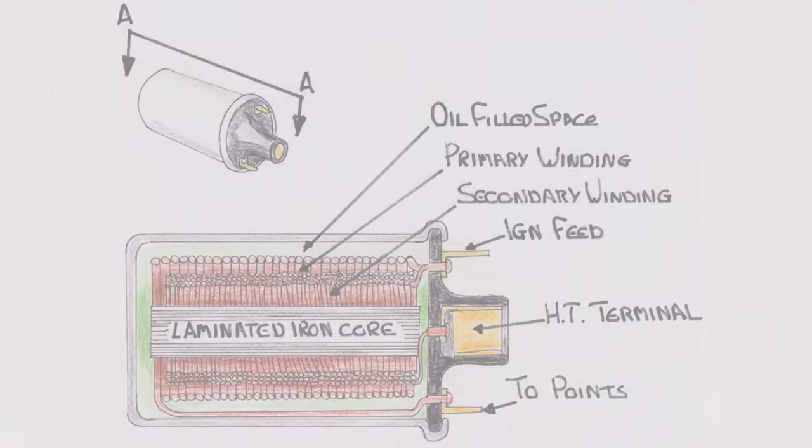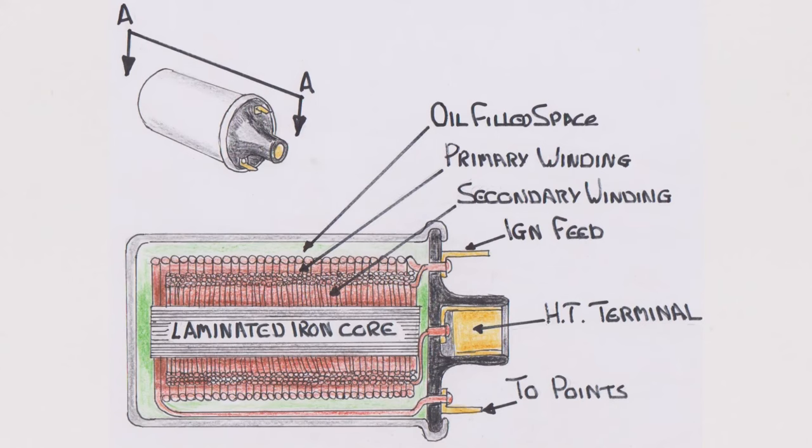When the points open, the primary winding no longer has a current flowing through it and the magnetic field collapses, in effect moving across the secondary winding. So it induces a current in the secondary winding, which is at a much higher voltage due to the far higher number of turns in the secondary winding.